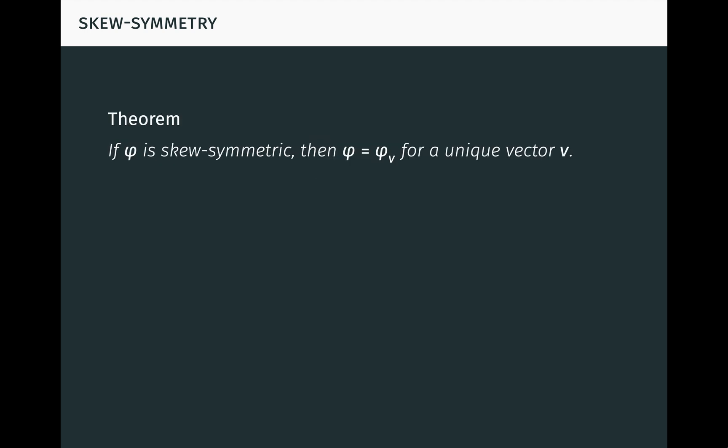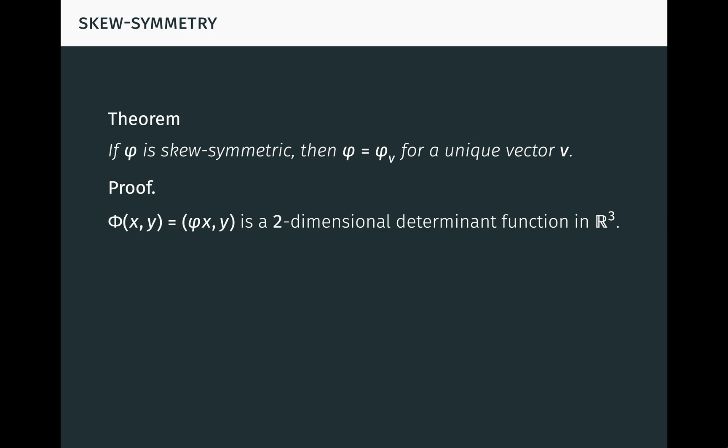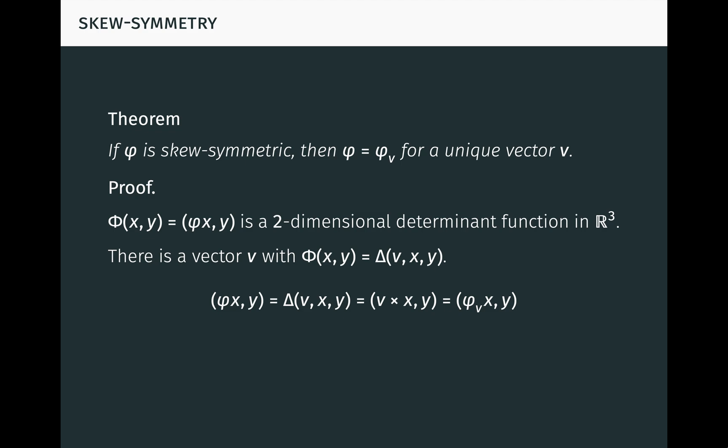Conversely, and importantly, if phi is skew symmetric, then phi equals phi v for a unique vector v. To see this, first observe that the function big phi defined by big phi of xy equals phi x times y is bilinear and alternating, since phi is skew symmetric. So it's a two-dimensional determinant function on R3. Geometrically, this means it measures oriented area in planes in R3. But in my video on determinants and volume, I showed that any function which measures oriented area in planes in R3 actually measures oriented volume relative to a fixed vector. So there's a vector v with big phi of xy equal to delta of v, x, y. This means that phi x times y equals delta of v, x, y, which equals v cross x times y, which equals phi v x times y. Since this holds for all vectors x and y, it follows from definiteness of the inner product that phi equals phi v. Isn't that a slick proof?